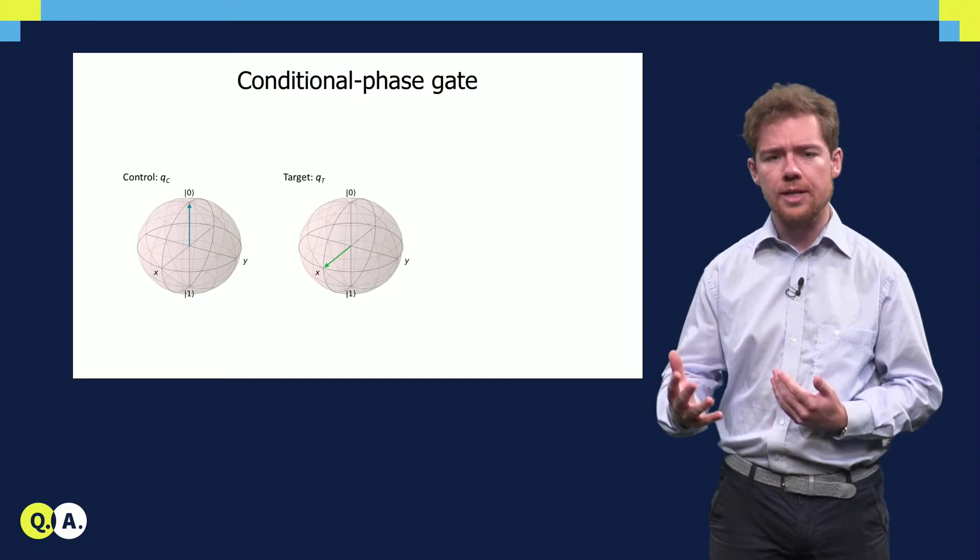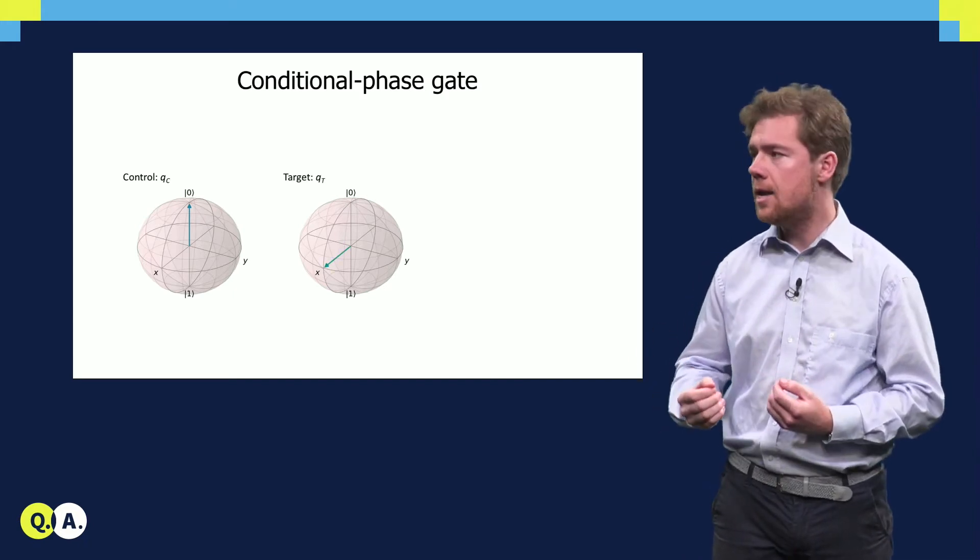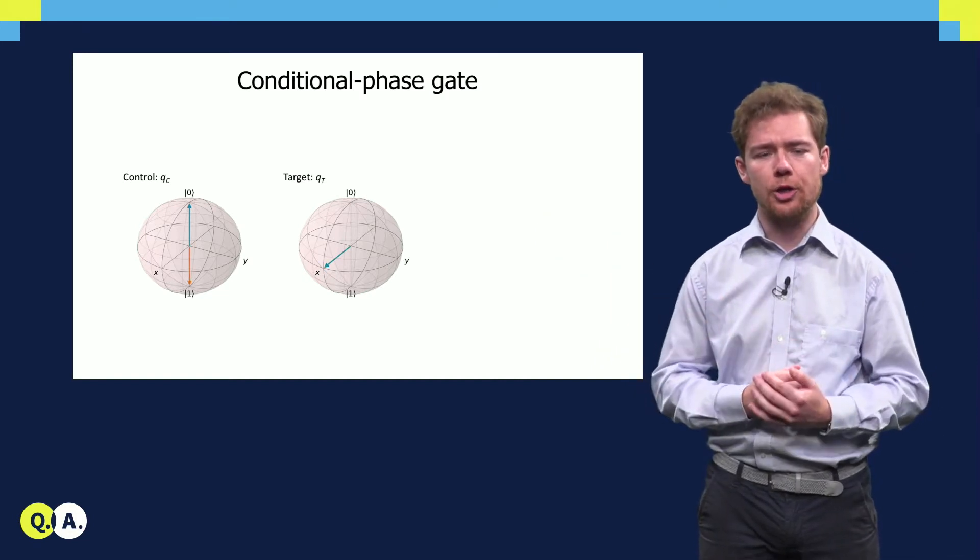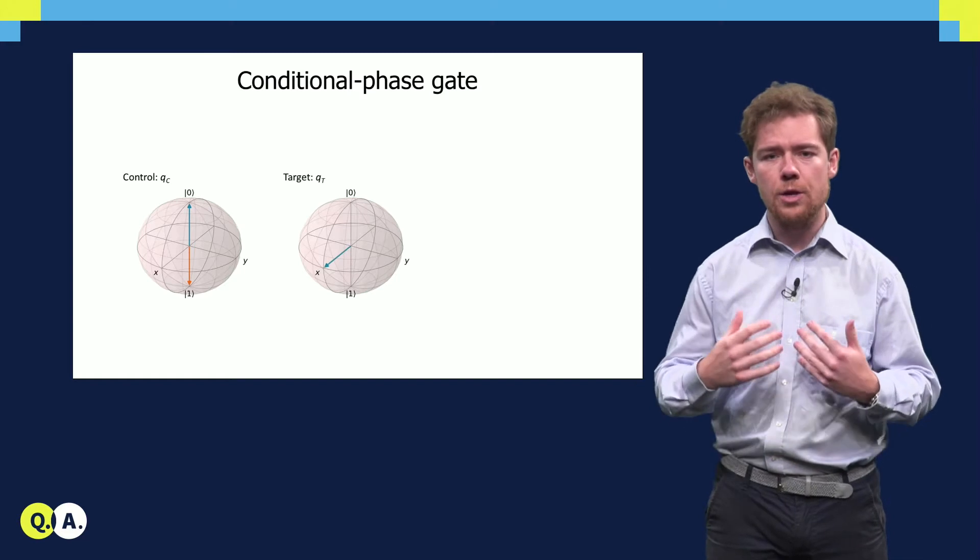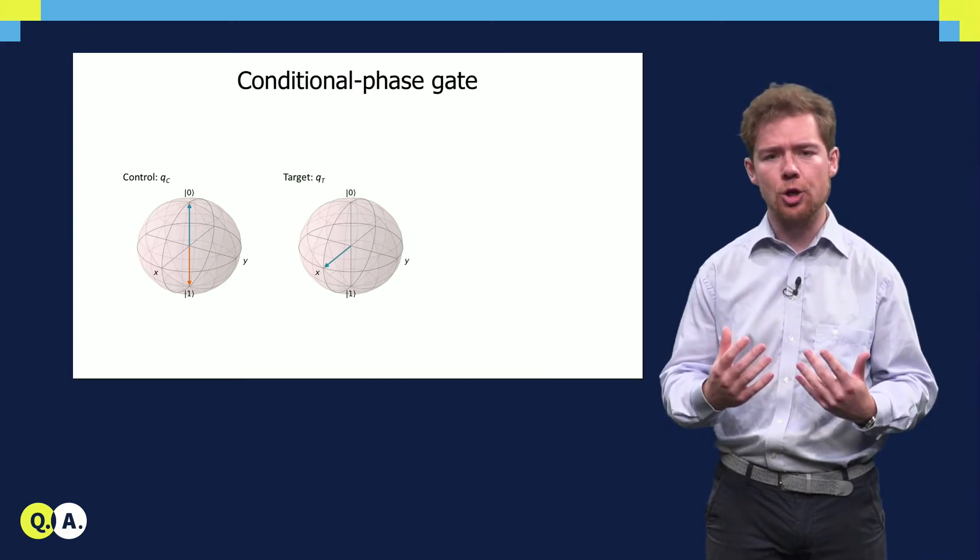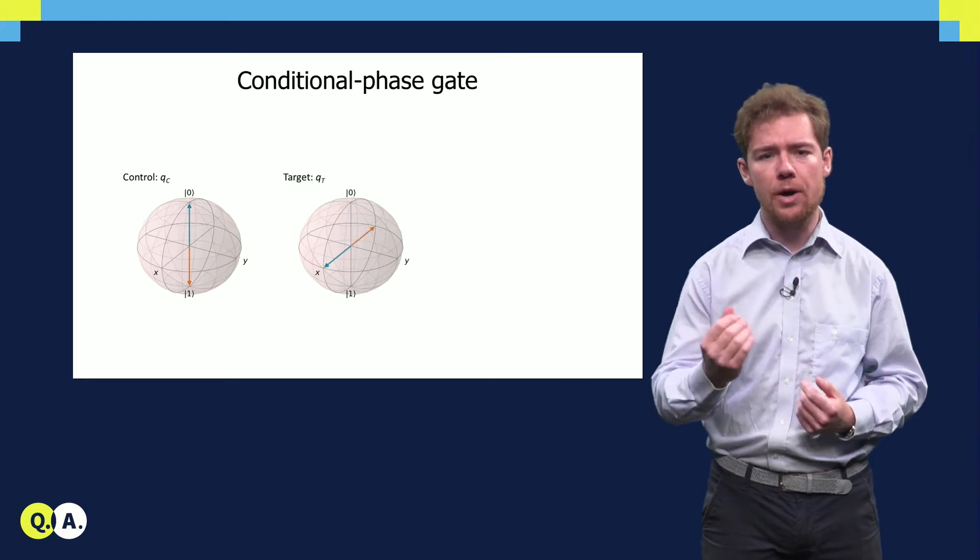When the control qubit is in the ground state and we apply the c-phase gate, there is no effect on the target qubit. However, when the control qubit is in the excited state, the target qubit will acquire pi-radians of phase.